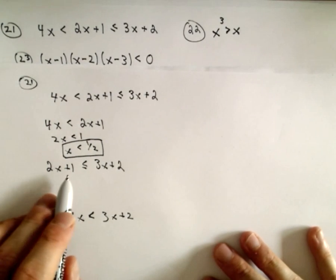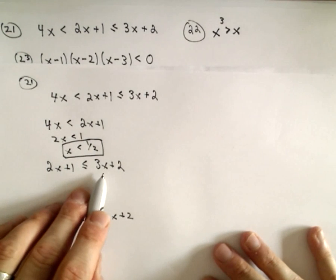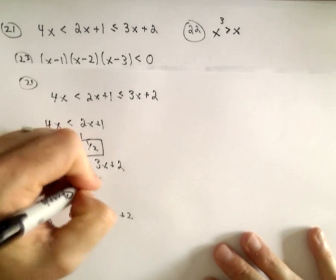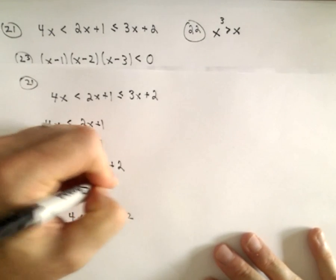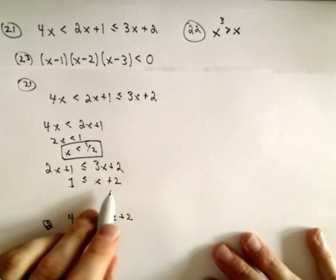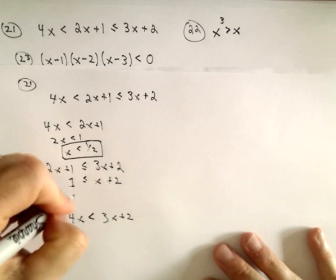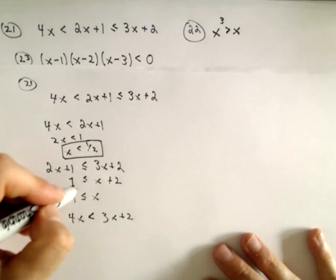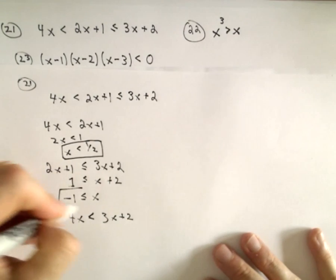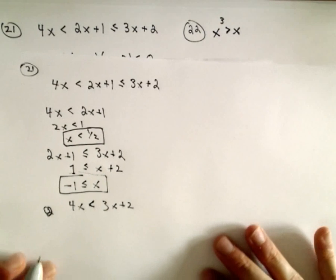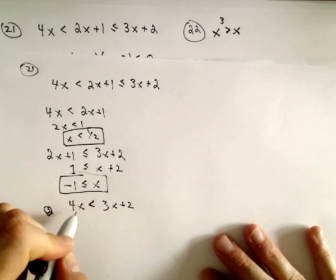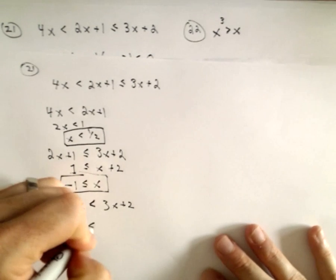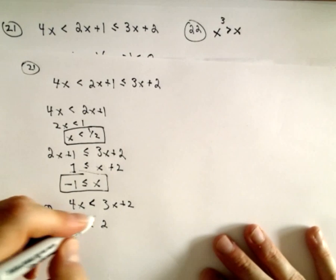For the second inequality, we can subtract 2x from both sides — that'll leave us with 1 less than or equal to x plus 2. And then if we subtract 2 from both sides, we'll get that x has to be greater than or equal to negative 1. From the last inequality, we can simply subtract 3x from both sides, and it says x has to be less than 2.